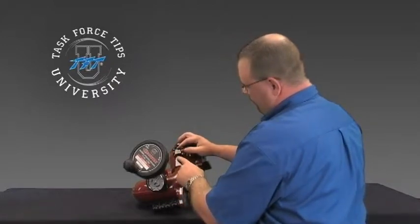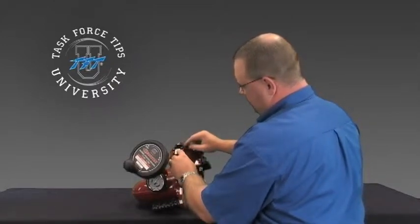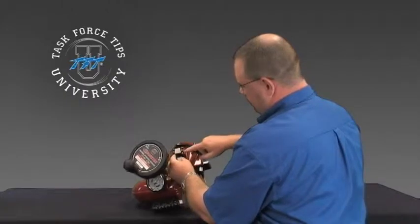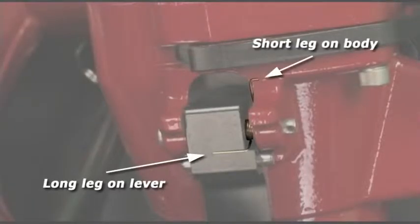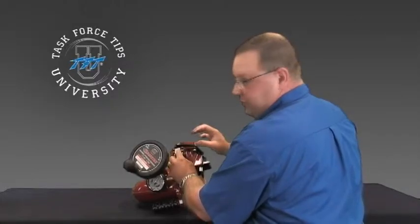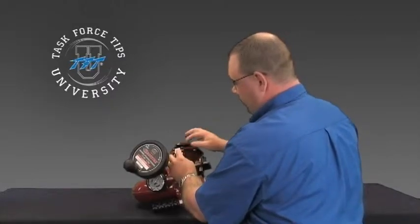Now you're going to remove the cam lock and the spring. Just make sure that you note the orientation of the spring with the long leg here, the short leg here, and the coil in the middle. As you pull that out, it is under tension so make sure that it doesn't spring out and you don't lose that spring.